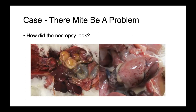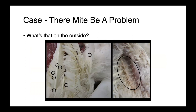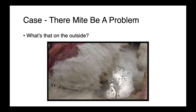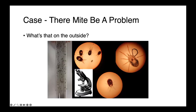Looking at the birds on necropsy was a really important part of this investigation. There were petechial hemorrhages all over the internal organs — petechiations on the ovary and the heart, which is indicative of sepsis. However, when the birds were grossly examined, all of these little black flecks could be seen all over the surface of the animals. When looked at more closely, both in tubes and microscopically, these turned out to be mites.